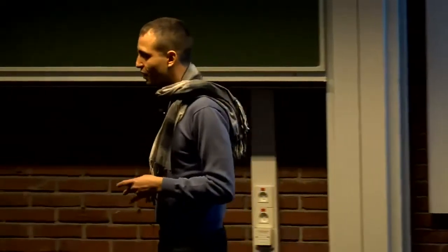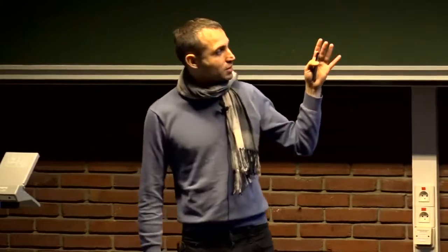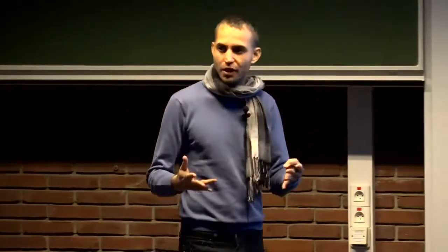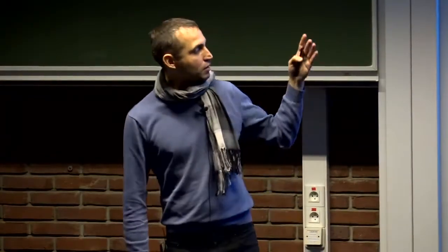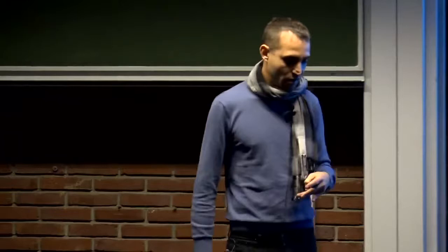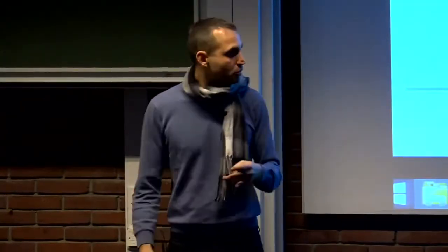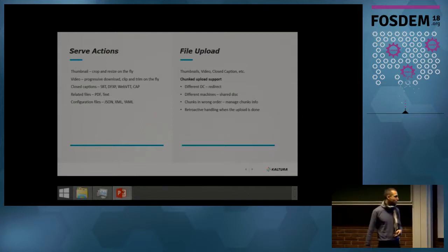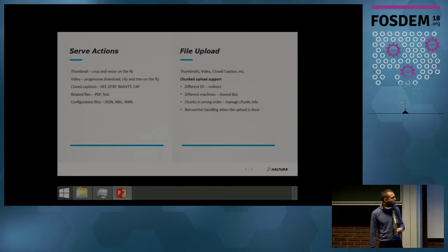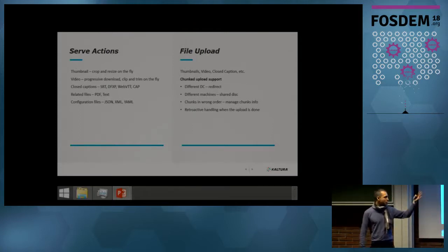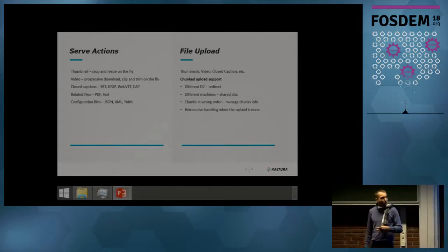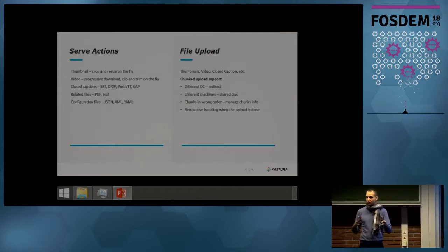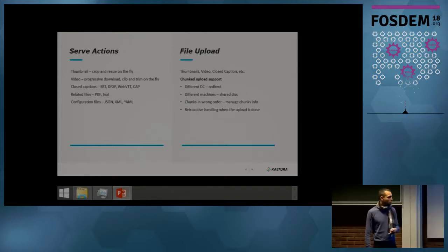Another problem that we had is we have different data centers. When you call the API, you don't know what data center you are calling. In fact, one chunk would arrive to a different data center, and then you couldn't combine them together. So, we just redirect. According to the first chunk that they selected, all the chunks from this moment on will be redirected to the same data center. In each data center, we have multiple machines. We just solve it with a shared disk. Chunks may arrive in the wrong order, and we manage it in order to know what chunk to put where.